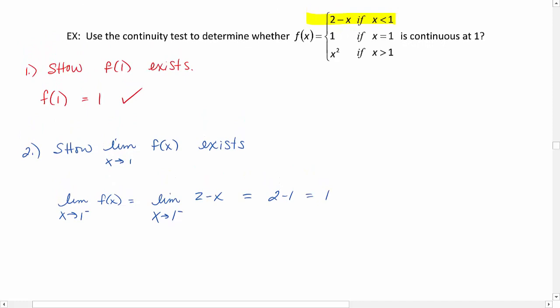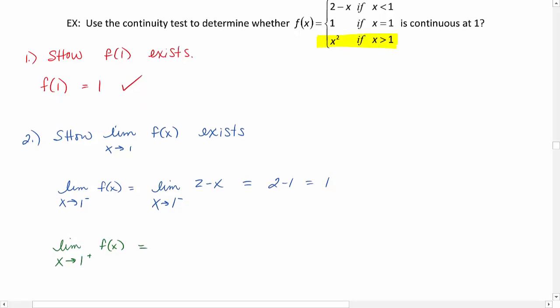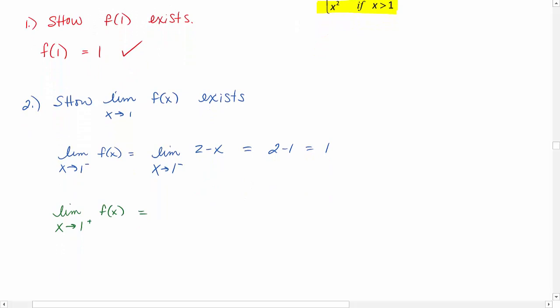Now we'll do the second side. We'll take a look at the limit as x approaches 1 from the right of f of x. So if we're approaching from the right, that means our x values are larger than 1, so we're going to be using this bottom function here, x squared. Plugging 1 in, 1 squared is equal to 1.